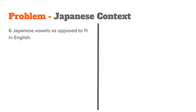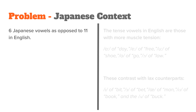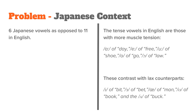In the Japanese context, it can be broken down to the fact that there are six Japanese vowels as opposed to the eleven in English. On the right side of the screen you can see the tense vowels in English — those with more muscle tension — which contrast with lax counterparts. The tense vowels, as in 'day', 'free', 'shoe', 'law', are contrasted by the lax counterparts, as in 'bit', 'bet', 'man', 'book'.